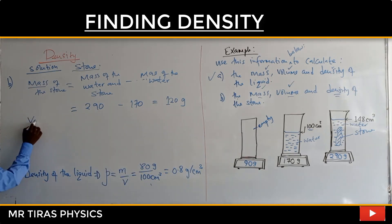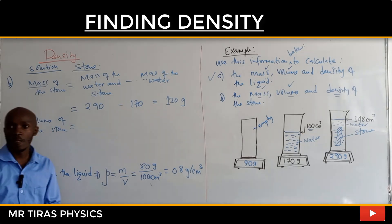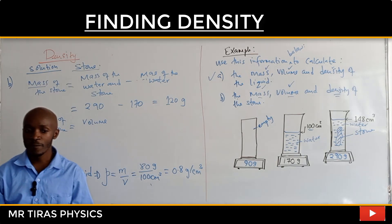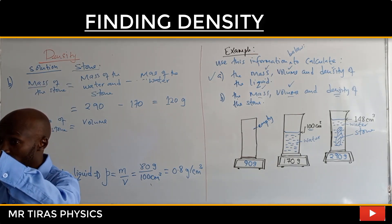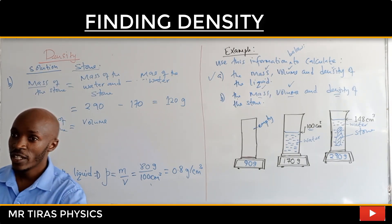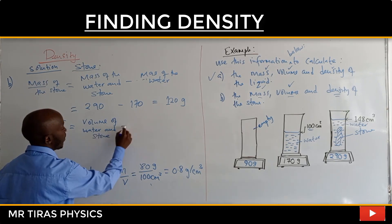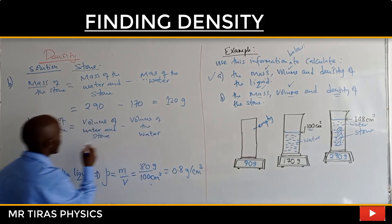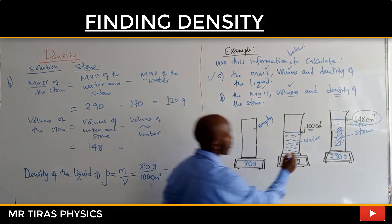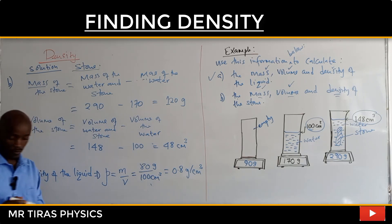For the volume of the stone, we use the displacement method. The volume before you put the solid in is the volume of water. After you put the solid in, the water rises. So the volume of the solid equals the volume of water and stone minus the volume of water — that's 148 minus 100 — giving us 48 centimeter cubed.